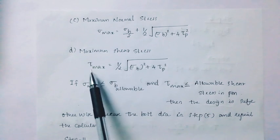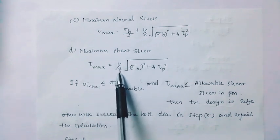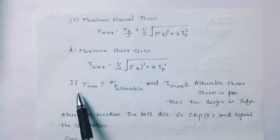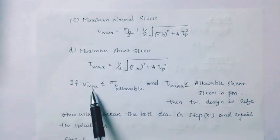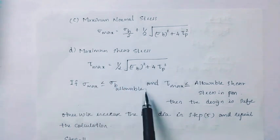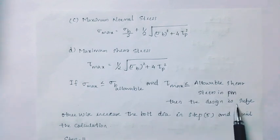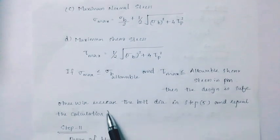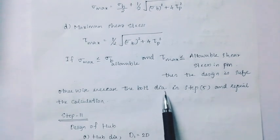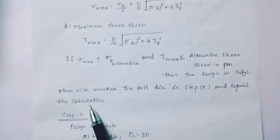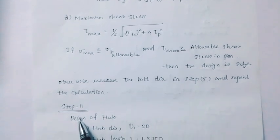If sigma max and tau max are allowable, then the design is safe. Otherwise, increase the bolt diameter in step 5 and repeat the calculation.